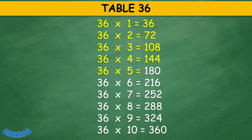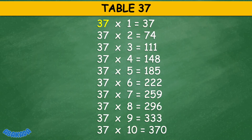Table 36: 36 times 6 equals 216, 36 times 7 equals 252, 36 times 8 equals 288, 36 times 9 equals 324, 36 times 10 equals 360.